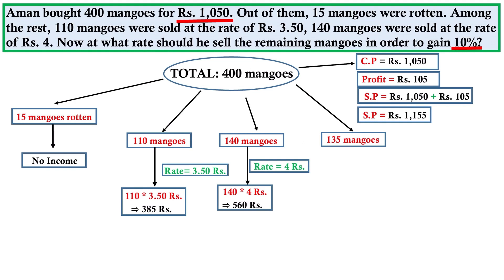So in summary, if we need 10% profit, the total required selling price is 1155. Now we subtract what was already earned from the mangoes sold, and the remaining amount tells us how much income we still need.